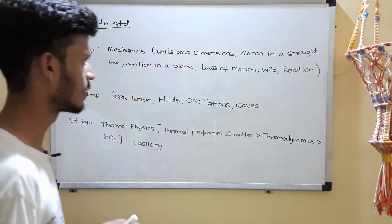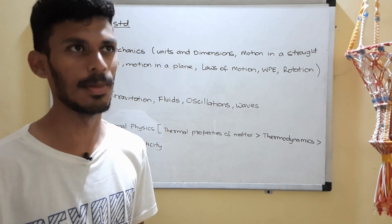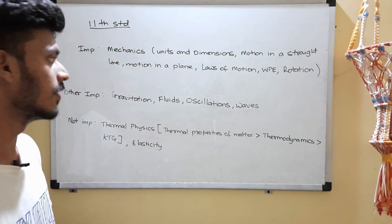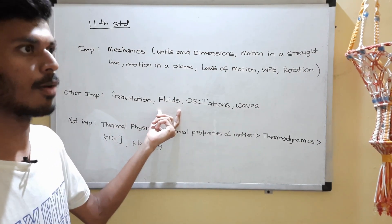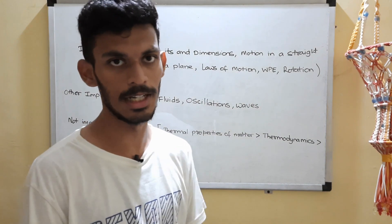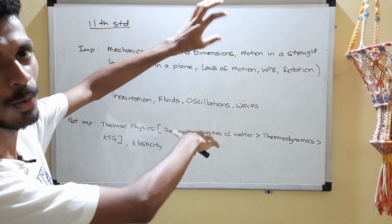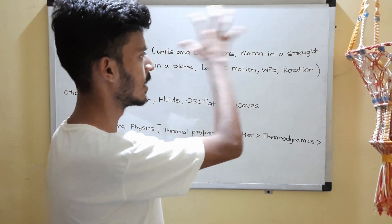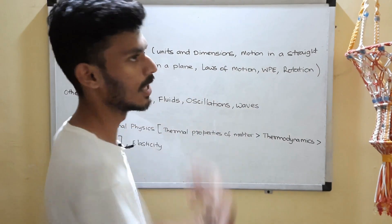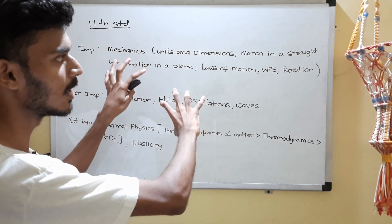Category two — other important chapters — are chapters that might occasionally dominate your BITSAT paper, meaning four questions directly from these topics. I've seen papers where fluids has had four questions directly, oscillations has dominated in some papers, and waves has dominated in others. Sometimes they reduce the number of questions from the mechanics section and increase questions from these four topics, so these topics are equally important.